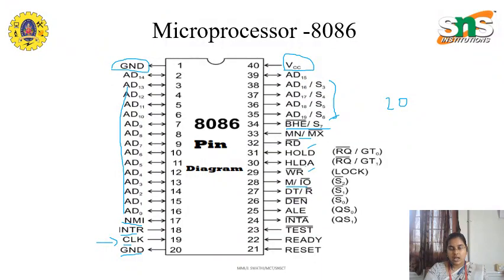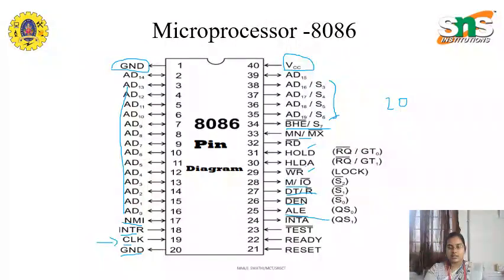We have read and write. We have the extra feature like data transfer status signal — when the device needs to be ready for transmitting and when the device needs to be ready for processing. Apart from that, we have data enable. When the data is ready for receiving or transferring, the data enable should be in the active state. Apart from that, we also have ALE — address latch enable, which is formally present in the 8085. And INTR, which is used for the interrupts, so we have the interrupt acknowledgement.